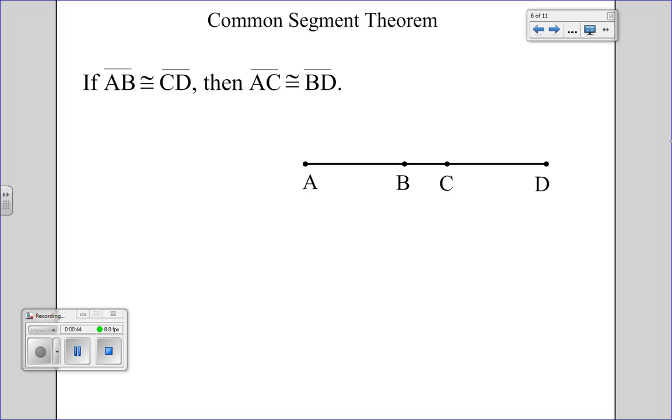If we look back at this, if we assume that AB is, let's say, 5 and BC is 3, then we know that all of AC will be 8. So we also know then that BD will also equal 8.